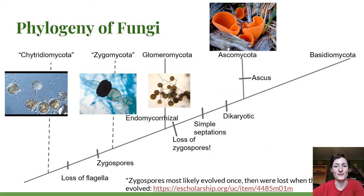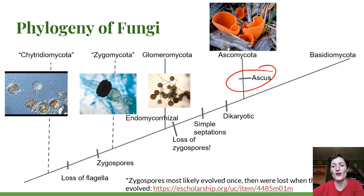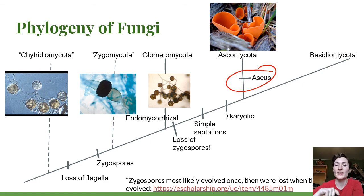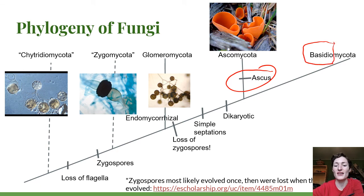So for our Ascomycota, we're looking for the ascus — they can take many different forms, but all will have typically eight spores contained within this sac-like structure, produced inside that sac. For the Basidiomycota, you can guess that their sexual reproduction will have something to do with the word 'basidio.'